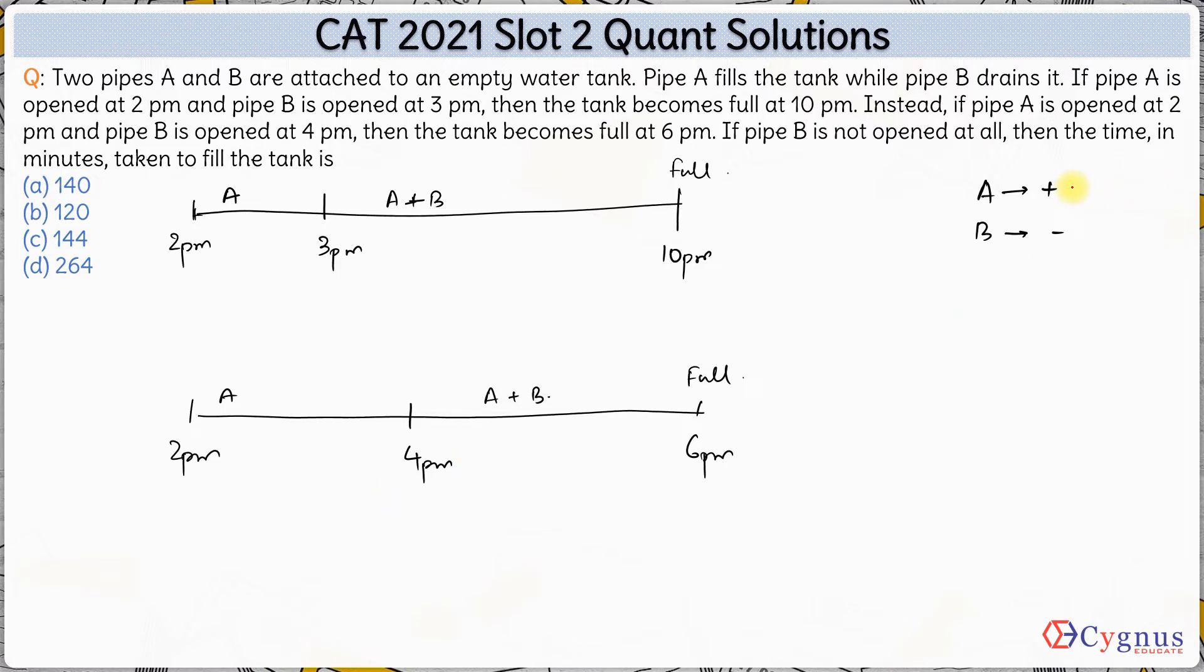So let us do one thing. Let us take efficiency of A as A units per minute or per hour and B's efficiency as B units per hour. Negative here indicates that B is emptying the tank.